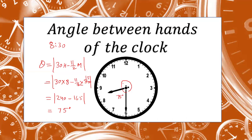The modulus sign is important because there are two angles. One is 75 degrees and the other reflex angle will be 360 − 75 = 285 degrees. So we can find out the two angles: one is 75 degrees using the formula, and the second by subtracting that angle from 360.